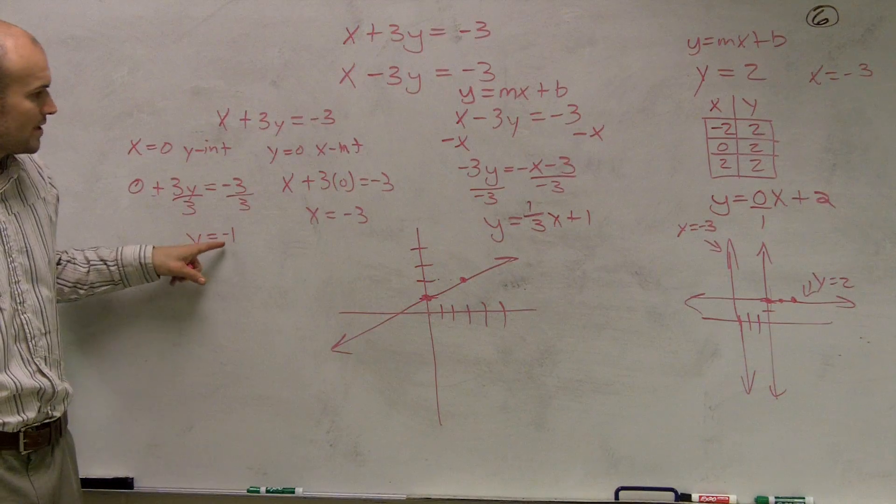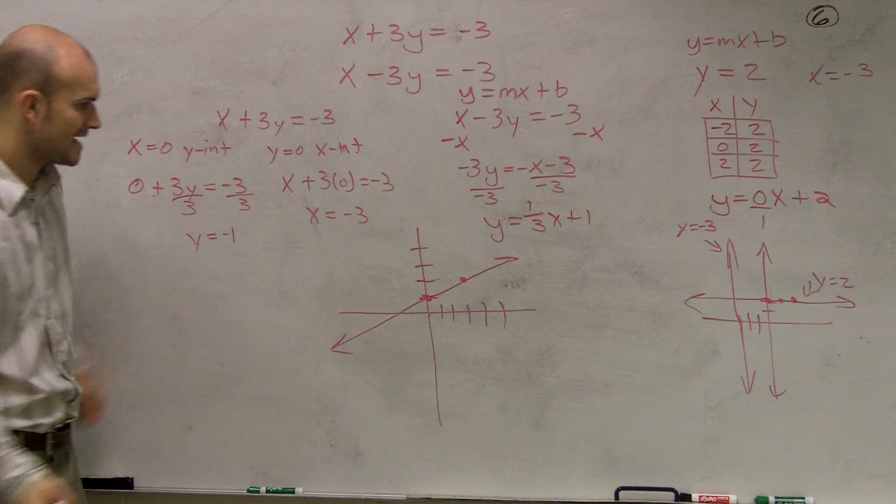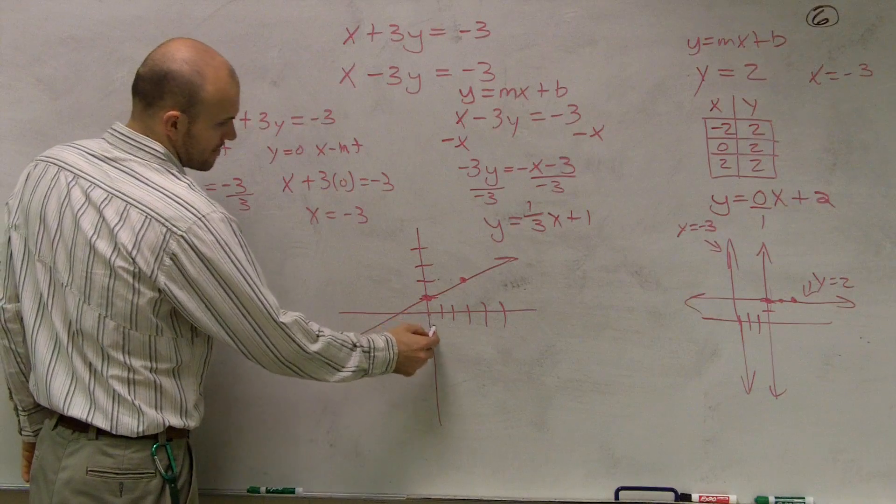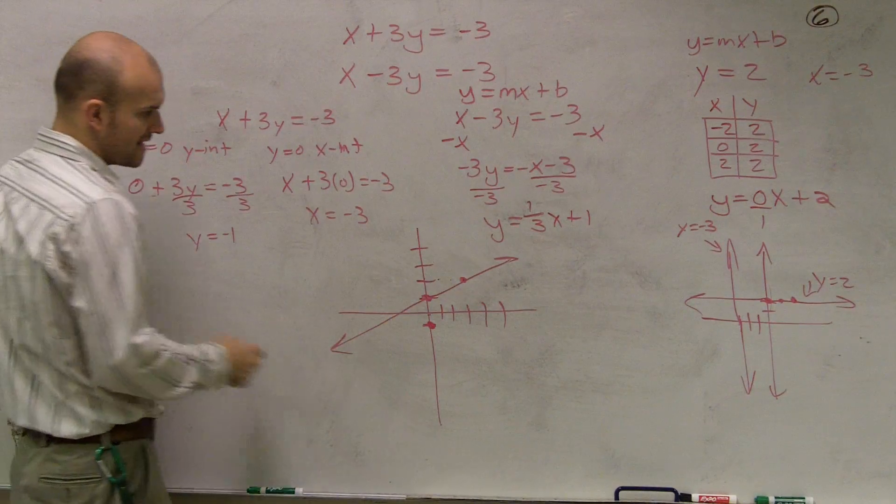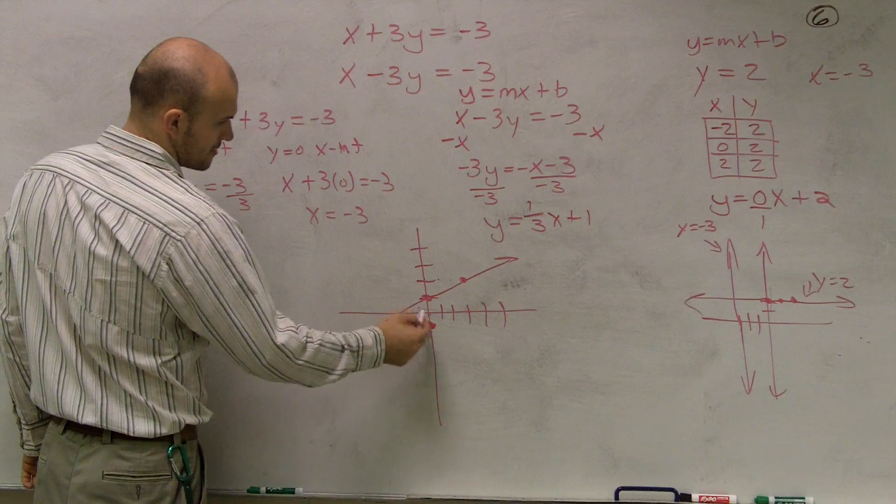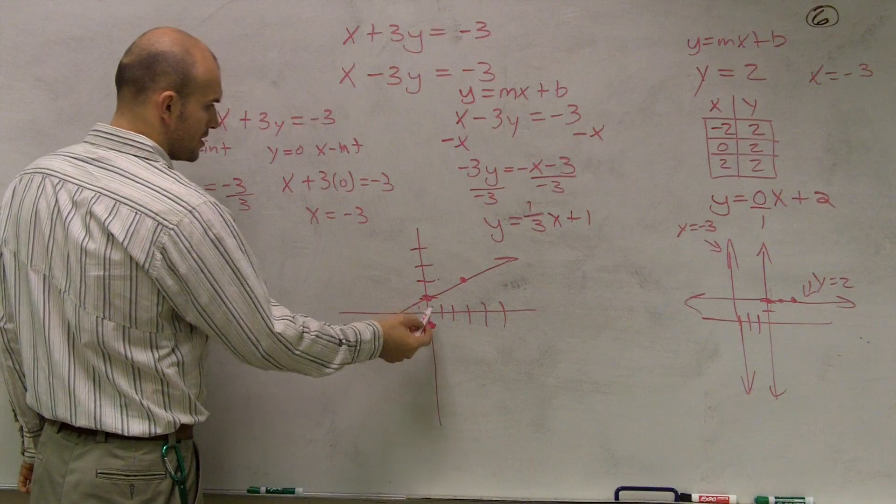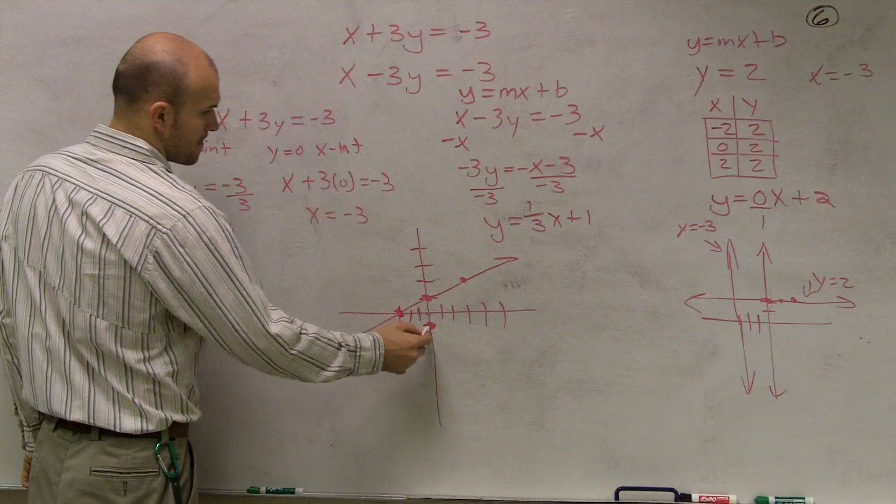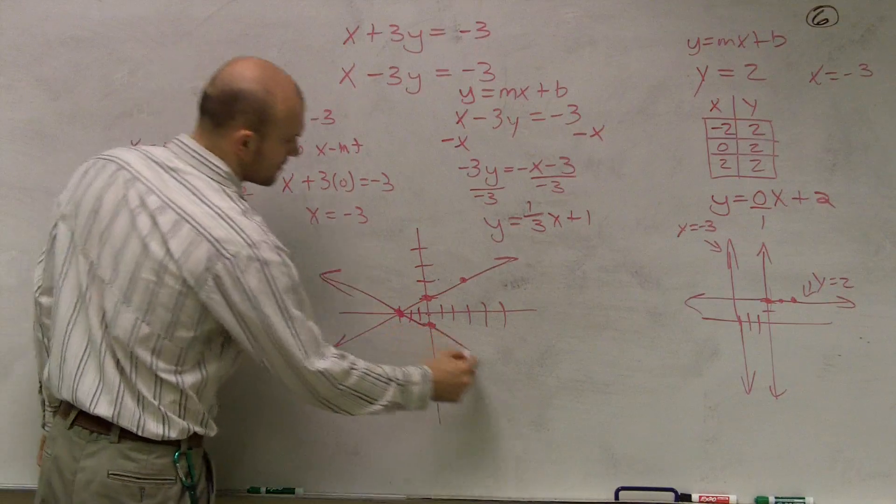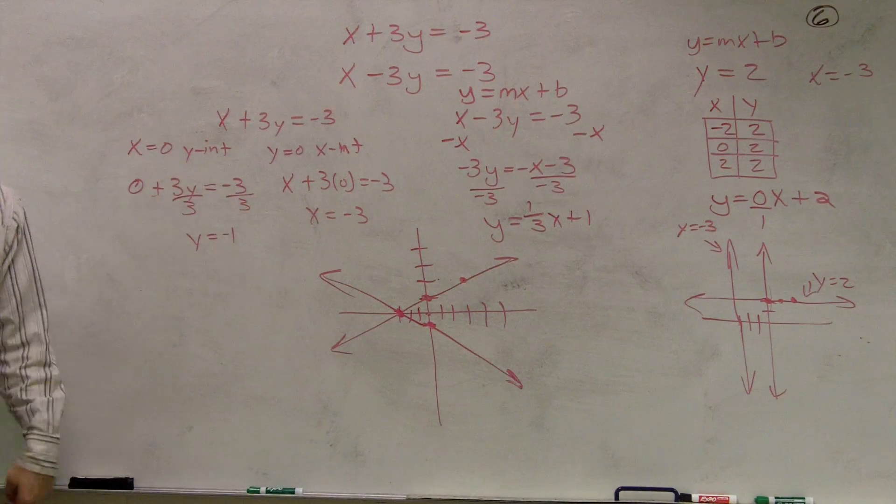Then if I wanted to solve this one, this one says my Y intercept's at negative one. And my X intercept's at negative three. So down one, one, two, three. So that graph looks like that.